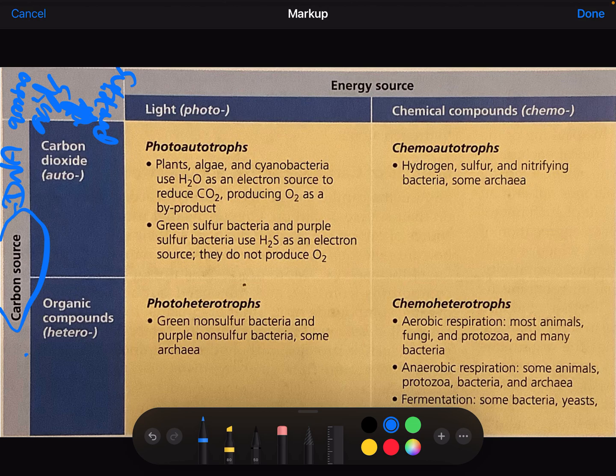Carbon sources are from either carbon dioxide or from organic compounds. The carbon dioxide users, we use the prefix auto. These are either photoautotrophs or chemoautotrophs as we see here.